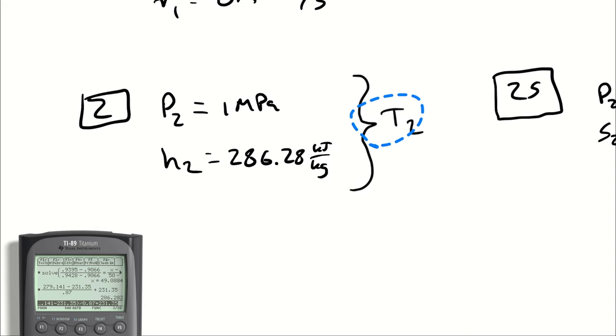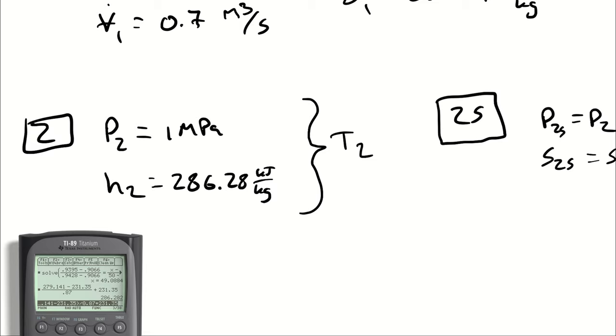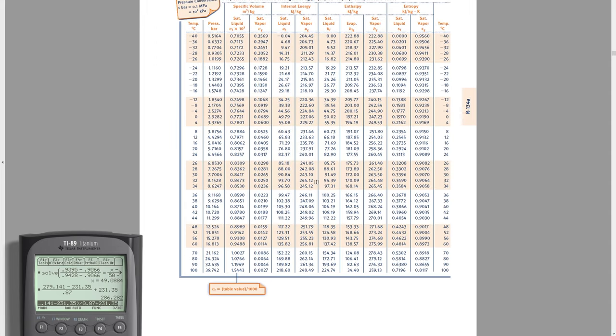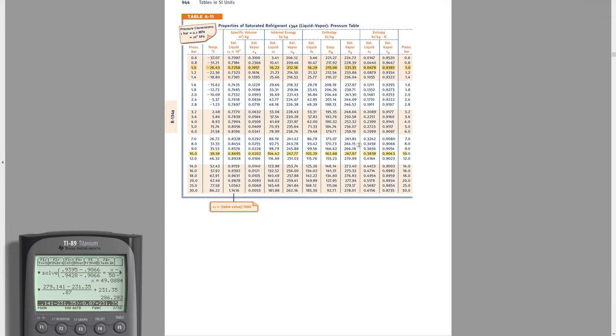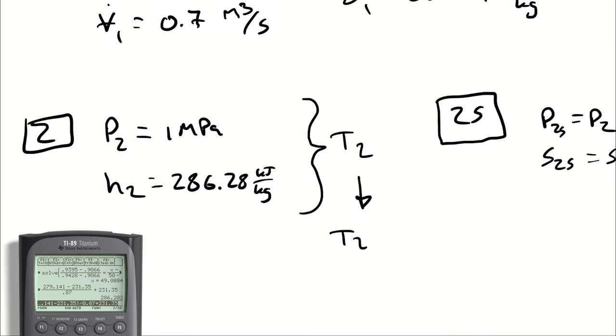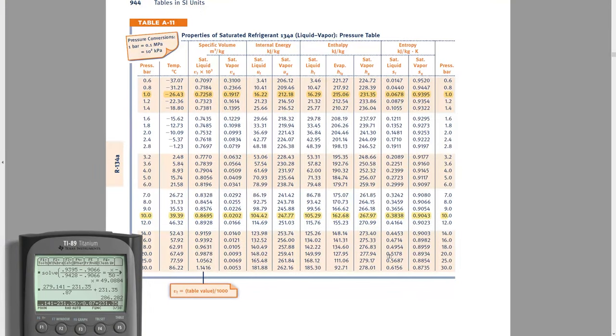Then the temperature is going to be whatever the temperature is at 1 megapascal and 286.28 kilojoules per kilogram. So what is the phase at state two actual? Well, we can follow the same logic that we did earlier. It will lead us to the same result. That logic is, if we look at the saturation tables for R134A and we find 10 bar, we can compare our enthalpy to the saturated liquid specific enthalpy and the saturated vapor specific enthalpy. Those were 105.29 and 267.97. If our enthalpy was less than 105.29, that means we have a compressed liquid. If it's greater than 267.97, that means I have a superheated vapor. My enthalpy is 286, which means that I have a superheated vapor, which means I go back to where I started.